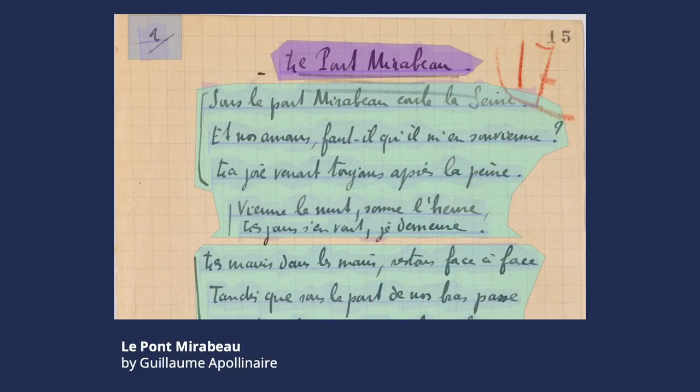Let us take an example. We have here a poem called Le Pont Mirabeau, written by Guillaume Apollinaire at the beginning of the 20th century. We segmented and labeled all of the zones that feature semantic components with the help of an annotation software. The layout is relatively simple, and we have drawn bounding boxes around the page number in blue, the title in purple, and the stanzas in green. All of these elements are now annotated as text regions and have a label that corresponds to their function.